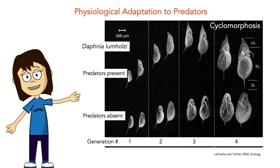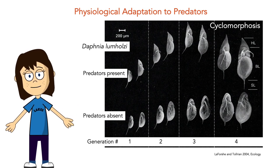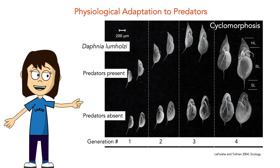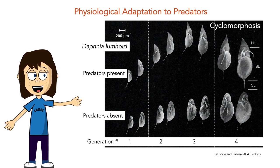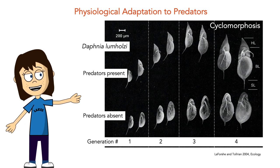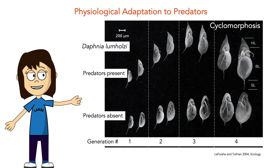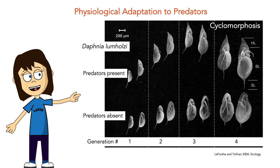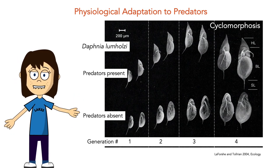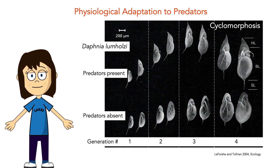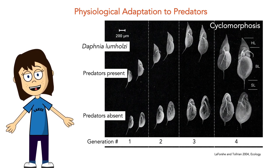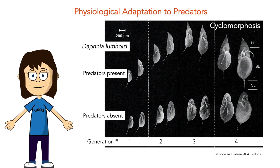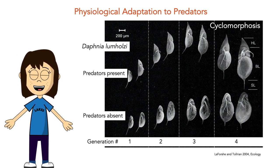Here's another example of cyclomorphosis from Daphnia. In four generations of Daphnia where no predators are present, the individuals look pretty similar in overall morphology. However, in a population where predators are present, we see a really distinct helmet formation develop through successive generations — thought to help reduce predation. Daphnia pulex neonates can also develop neck teeth, and these neck teeth reduce the susceptibility of the neonates to predation.